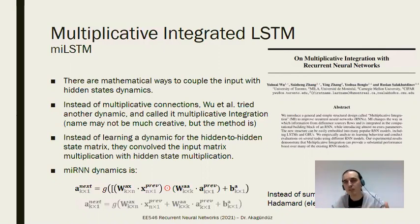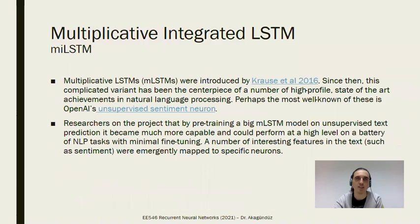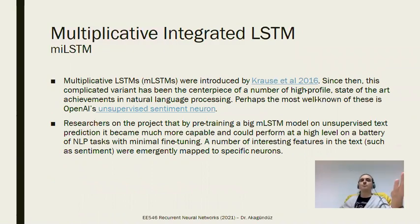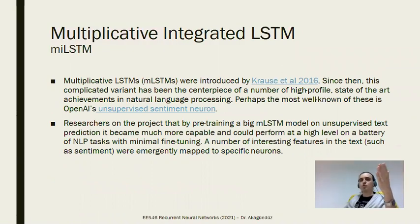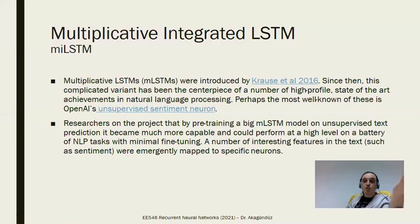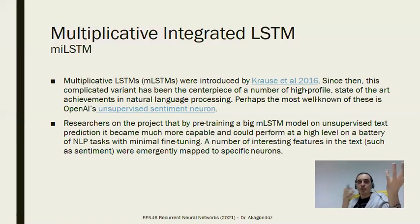They are trying to make the relationship of the hidden state with the input something different from a linear one — trying to make it more complex. The multiplicative LSTM was first proposed by Krüger et al. in 2016. You can create complicated versions of it because you're just changing that linear nature.